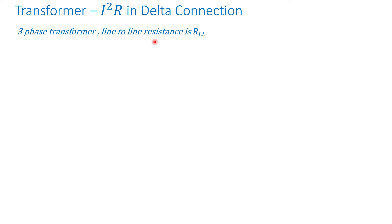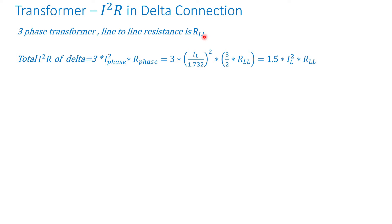Now let's figure out I squared R in a delta connection. Again, we have a three-phase transformer where the line-to-line resistance is R_LL. The total I squared R of the delta winding — three phases again — uses the same base equation: three times the phase current squared times the phase resistance. In a delta, the phase current equals the line current divided by square root of 3.